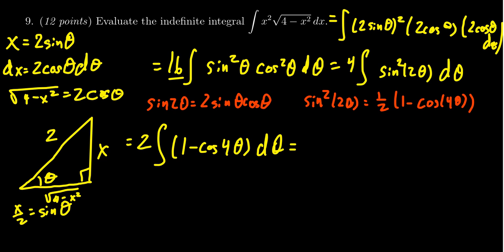That's now a function that I'm ready to find the antiderivative of. So taking the antiderivative, we're going to get two times theta minus one fourth sine of four theta plus a constant.